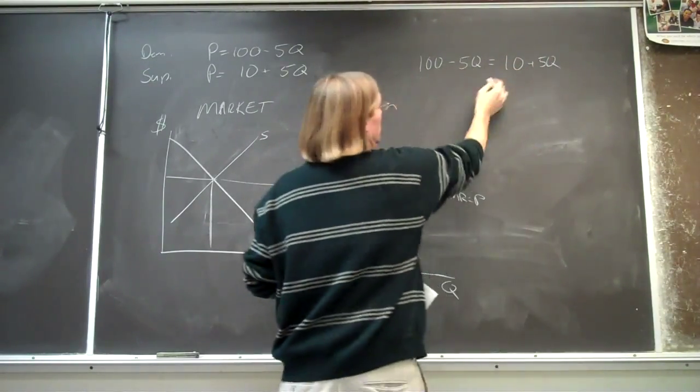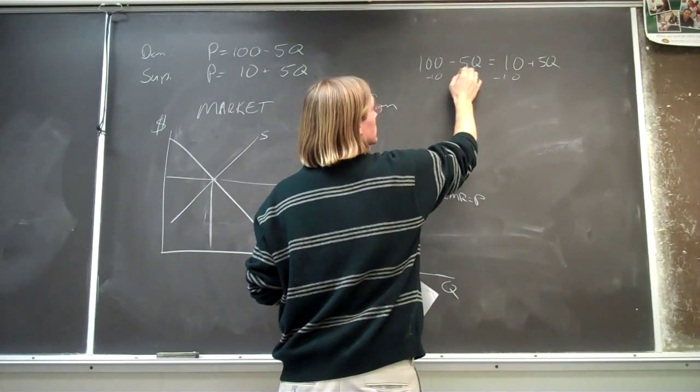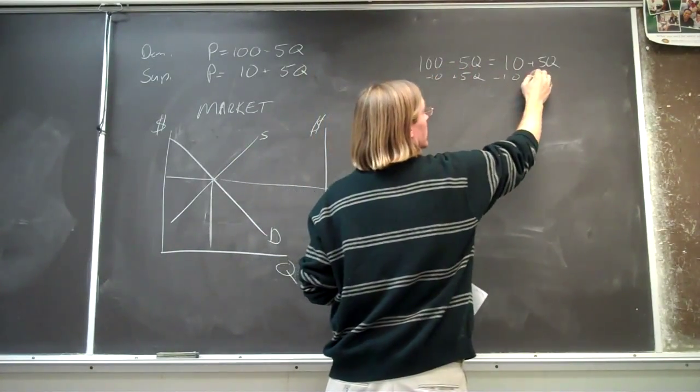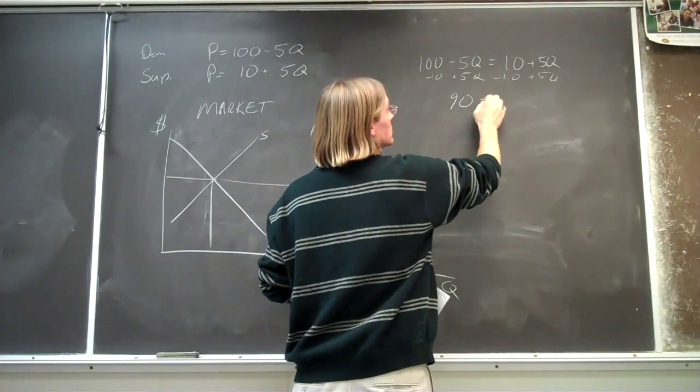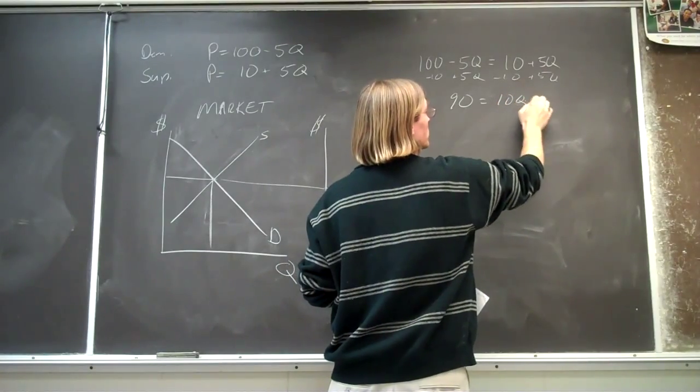and we should be able to subtract 10, add the 5Q, and so we get 90 equals 10Q,